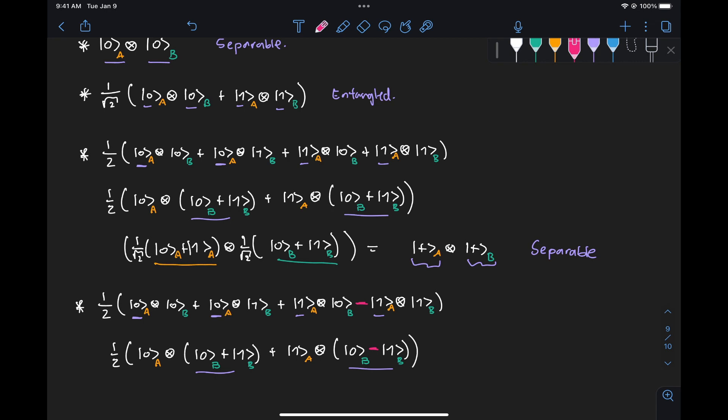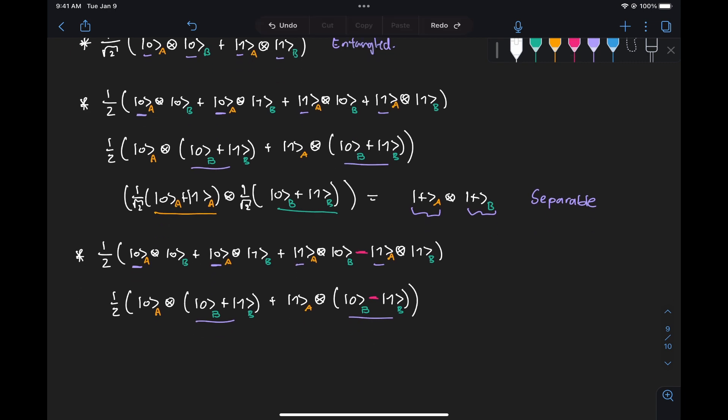And what we can see from this expression is that we can factorize this further, right? If we do the same trick of distributing this one half into a one over root two here and a one over root two here, well, this state is now equivalent to zero tensor plus plus one tensor minus. So we turn this state from four summation terms to only two summation terms, but we can't turn it into a single tensor product. So that means the state is entangled.